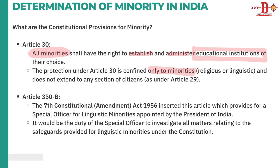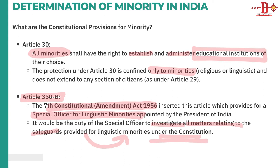Then comes Article 350B, inserted through the 7th Constitutional Amendment Act 1956. This provides for a special officer for linguistic minorities, appointed by the President of India. The special officer's duty is to investigate all matters related to the safeguards provided to linguistic minorities under the constitution of India. So these are the three main constitutional provisions dealing with minorities: Articles 29, 30, and 350B.